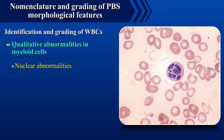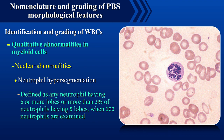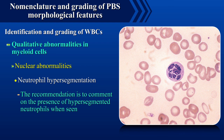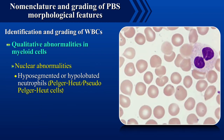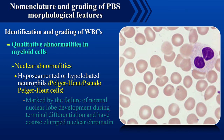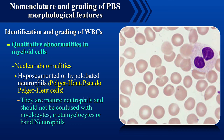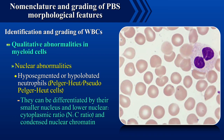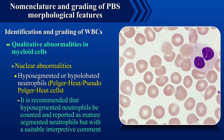Coming to nuclear abnormalities: neutrophil hypersegmentation is defined as any neutrophil having 6 or more lobes, or more than 3% of neutrophils having 5 lobes when 100 neutrophils are examined. The recommendation is to comment on the presence of hypersegmented neutrophils when seen. Hyposegmented or hypolobated neutrophils are marked by failure of normal nuclear lobe development during terminal differentiation and have coarse clumped nuclear chromatin. They should not be confused with myelocytes, metamyelocytes or band neutrophils, and it is recommended they be counted and reported as mature segmented neutrophils with a suitable interpretive comment.